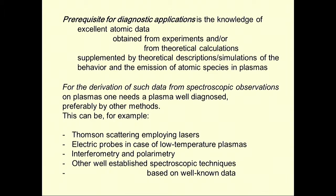To get the data, you need a plasma which is well diagnosed. To get atomic data, you have to know your plasma very well. You can analyze your plasma by Thomson scattering employing lasers, which is usable for a broad range of atomic species. You can use electric probes, used in low temperature plasmas. You use interferometry and polarimetry on small and big machines, or other spectroscopic data which are well based to transfer results to unknown data.